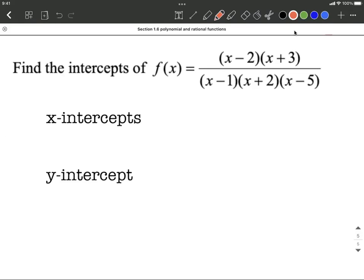Okay, we have a factored rational function. We want to find the x-intercepts and the y-intercepts for this function. Hopefully not too bad of a problem here.